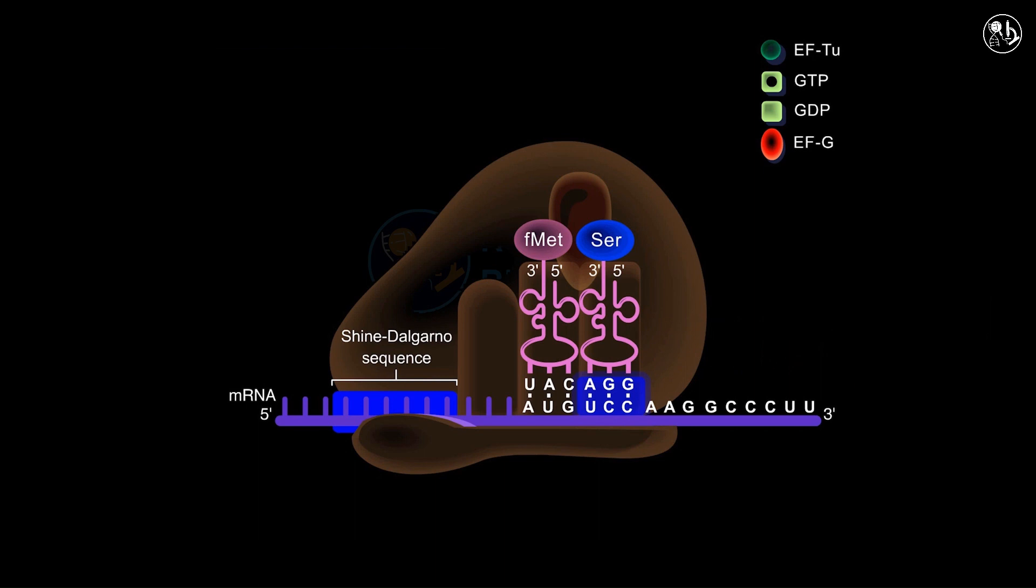With the tRNA molecules present in both the P and A sites, a peptide bond is able to form between the adjacent amino acids. Peptidyl transferase, which is found in the large subunit of the ribosome, catalyzes this reaction.